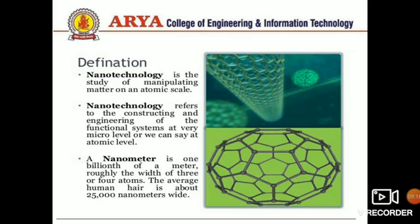A nanometer is one billionth of a meter, roughly the width of three or four atoms. For comparison, a human hair is about 25,000 nanometers wide.